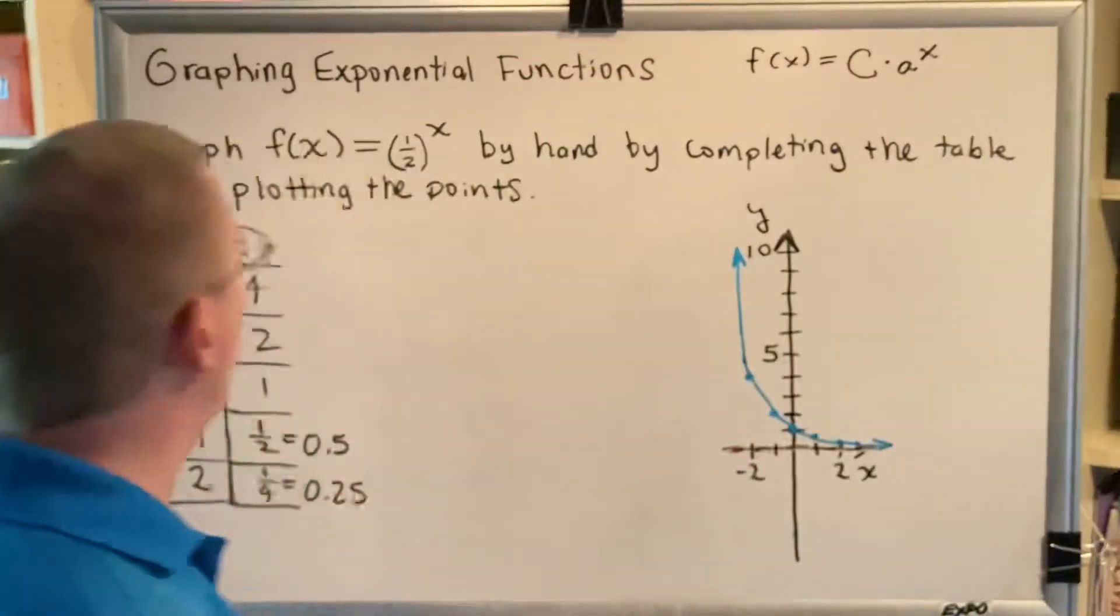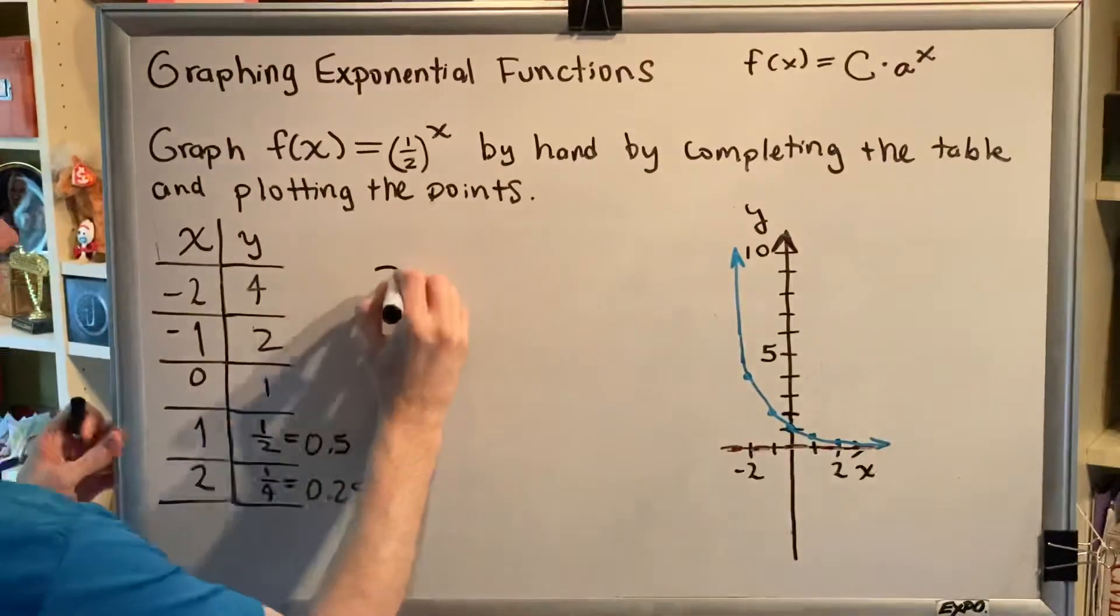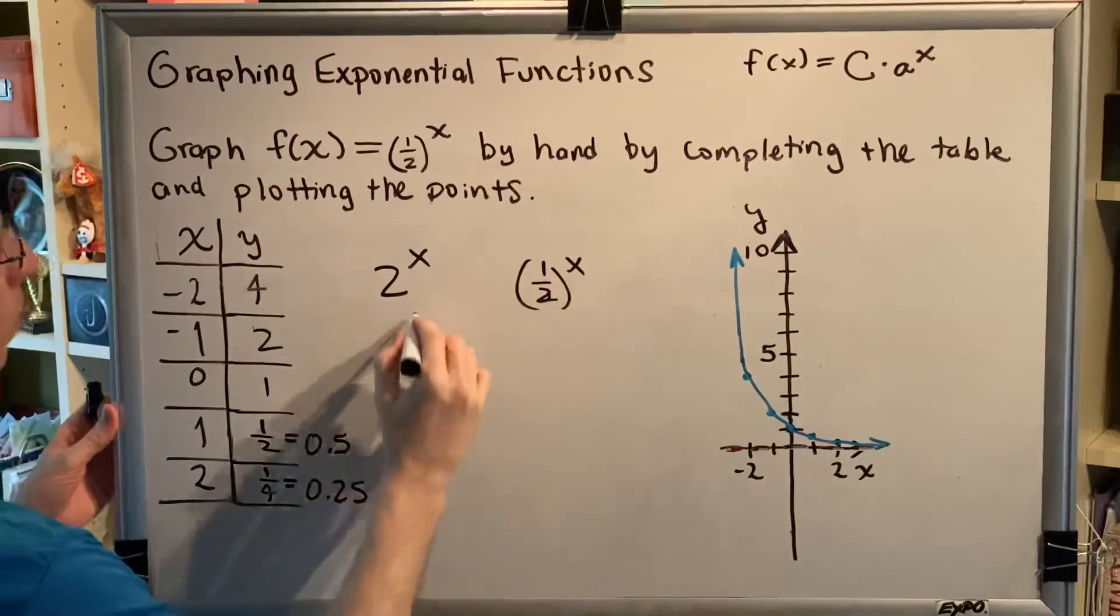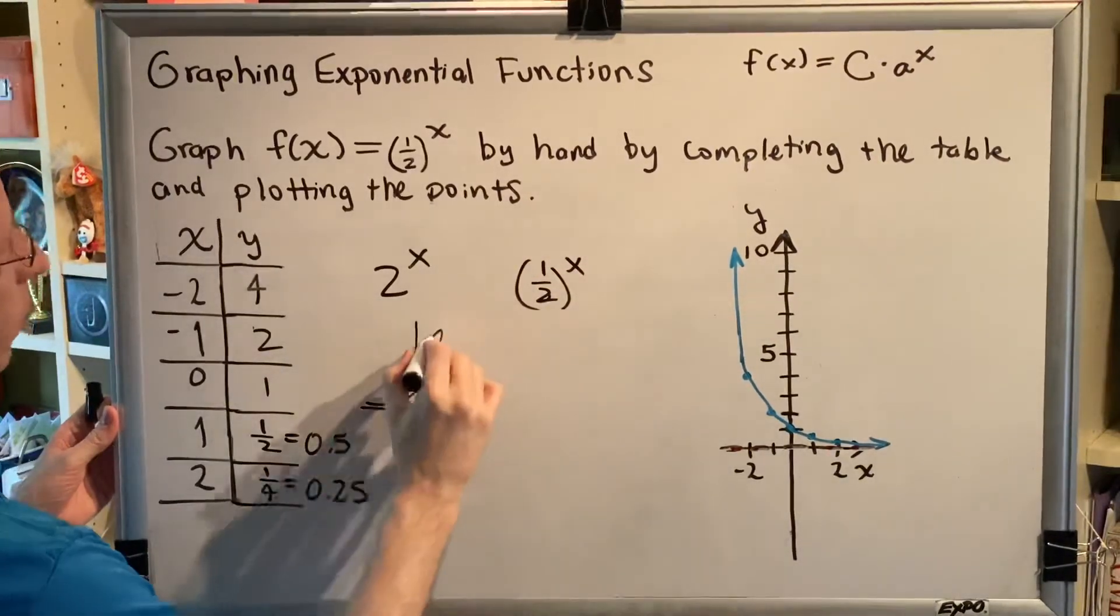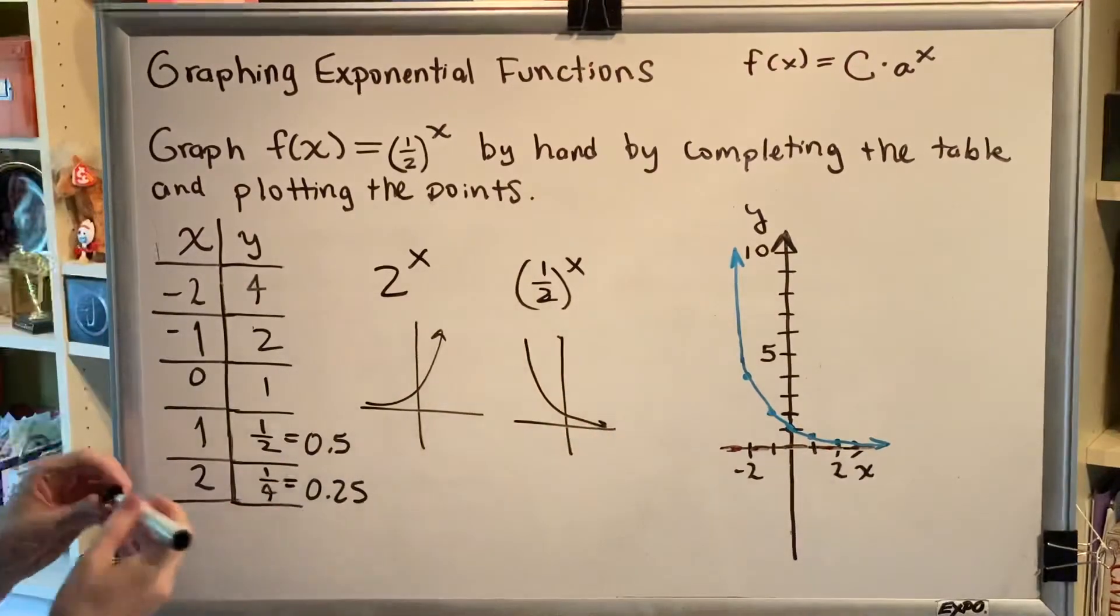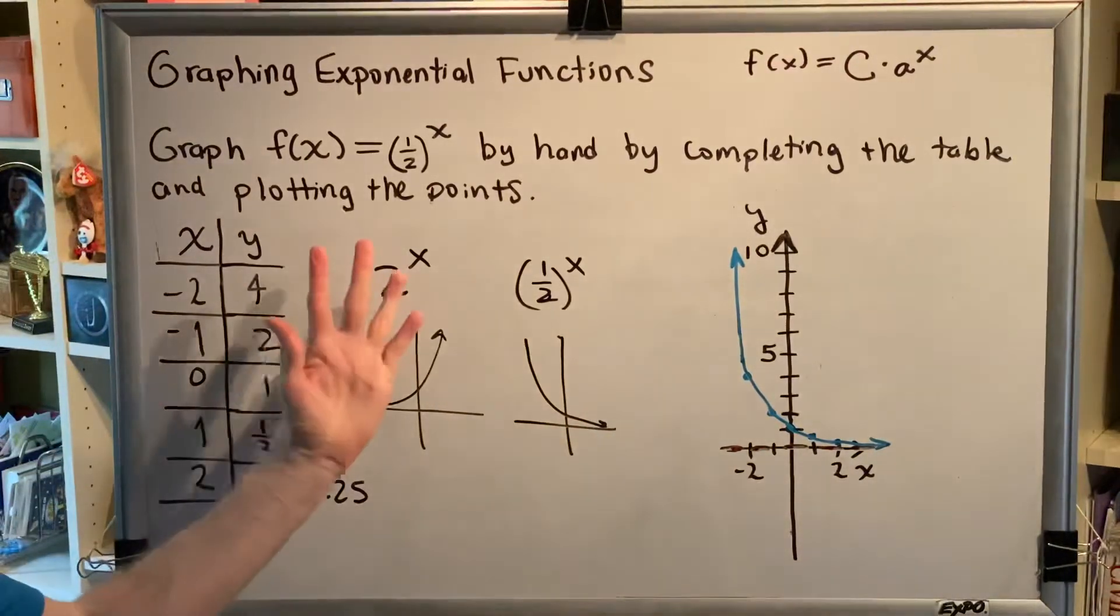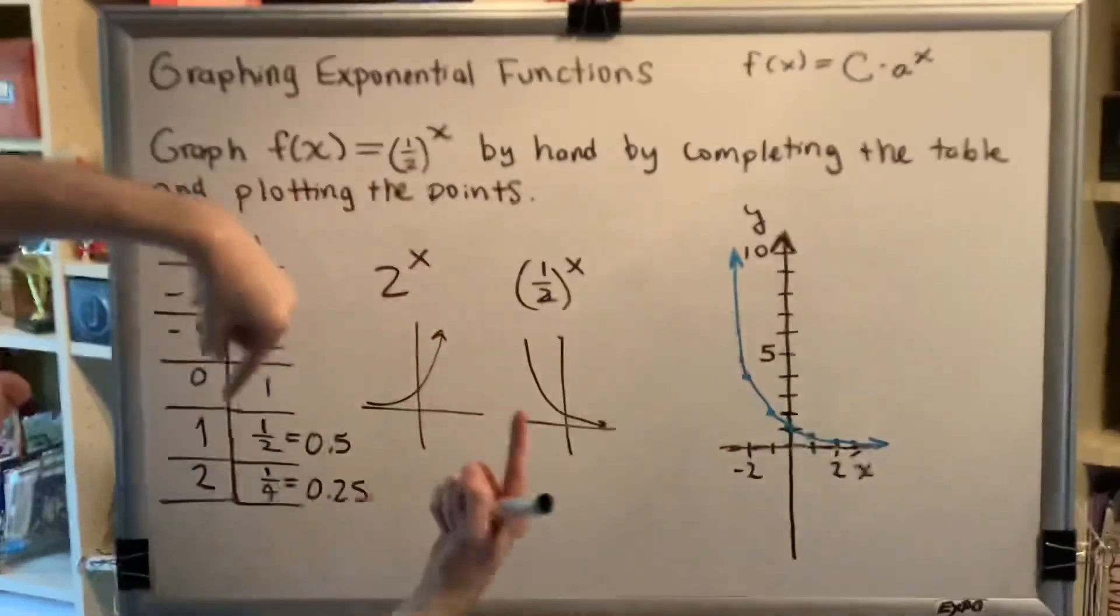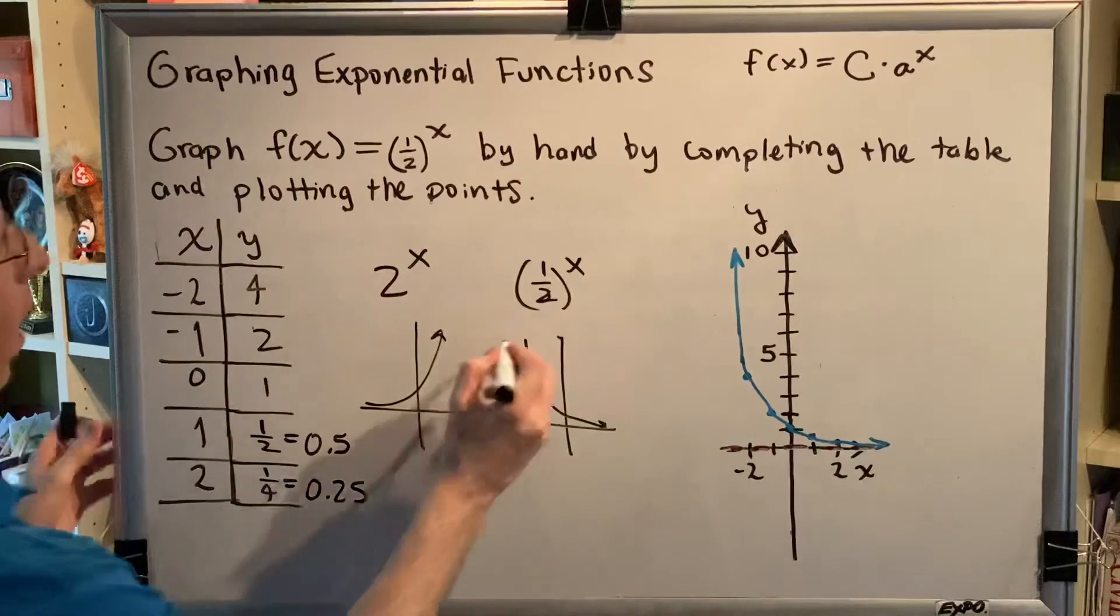Now, if you've already seen the video that shows the graph of 2^x, we can now make a comparison between these two. 2^x looks like this. (1/2)^x looks like this. So it appears that it has reflected this around the y-axis. It has spun the entire graph around the y-axis.